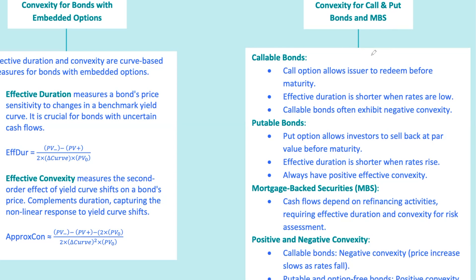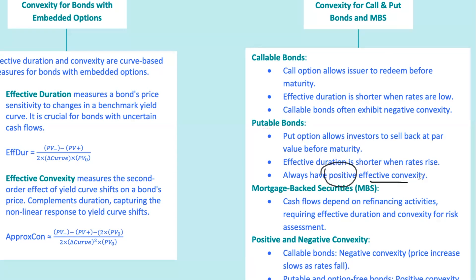A putable bond gives the bondholder the right to sell the bond back to the issuer at par before maturity, usually when interest rates rise. This protects the investor from price declines when rates go up. Effective duration of a putable bond is shorter when rates rise — a higher likelihood of being put back to the issuer. Unlike callable bonds, putable bonds generally have positive convexity; as rates decrease, the bond price tends to increase more significantly. In a rising rate environment, a putable bond is like having an insurance policy — if rates go from 3% to 5%, the put option protects the investor, limiting the price drop.